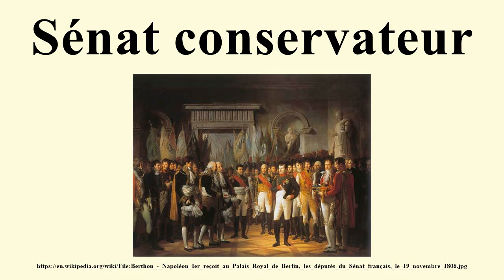It lasted until 1814, when Napoleon Bonaparte was overthrown and the Bourbon monarchy was restored. The Sénat Conservateur was a key element in Napoleon's regime. Together with the Tribunate and the Corps Législatif, the Senate formed one of the three legislative assemblies of the consulate.